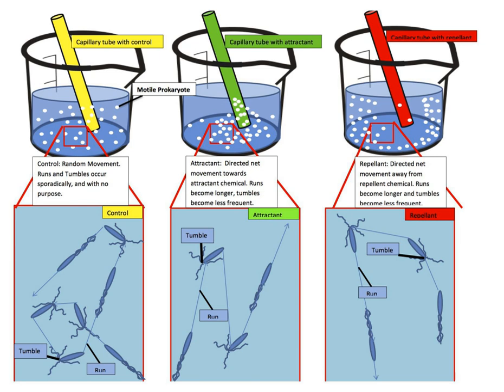In multicellular organisms, chemotaxis is critical to early development, such as movement of sperm towards the egg during fertilization and subsequent phases of development, including migration of neurons or lymphocytes, as well as in normal function and health, such as migration of leukocytes during injury or infection.